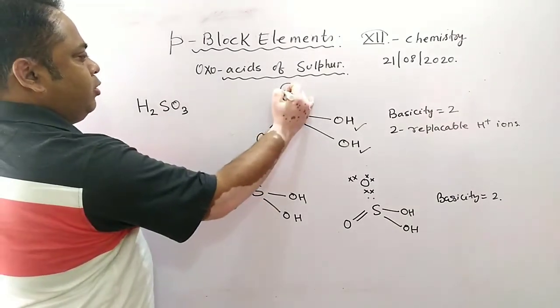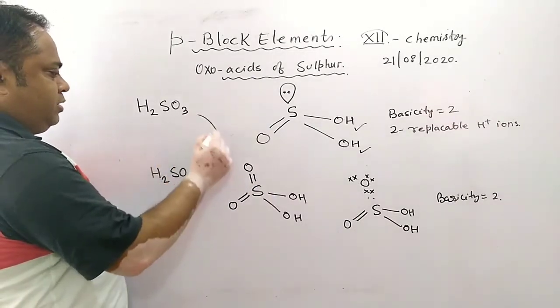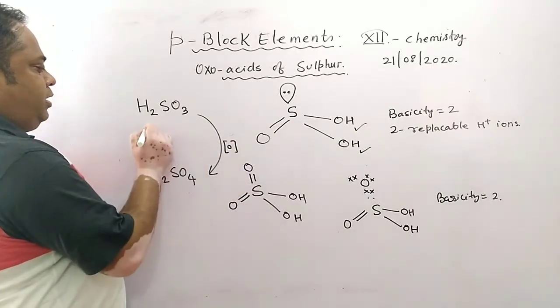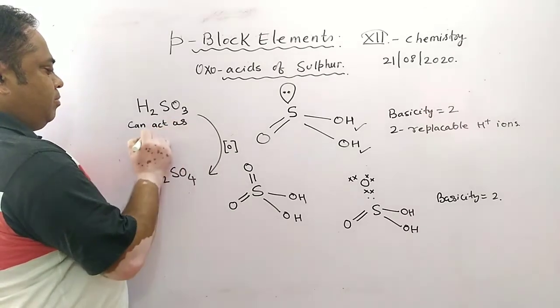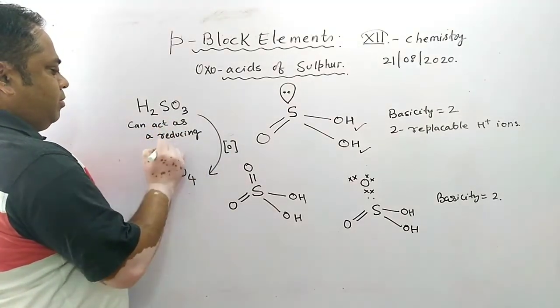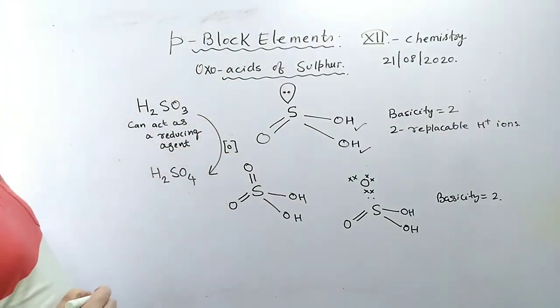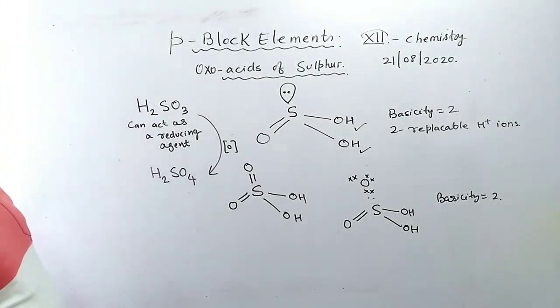But here this lone pair of electrons still can form a bond pair and it can take one oxygen. So H2SO3 can act as a reducing agent because it can take one oxygen. It can still take one oxygen, so it can act as a reducing agent.